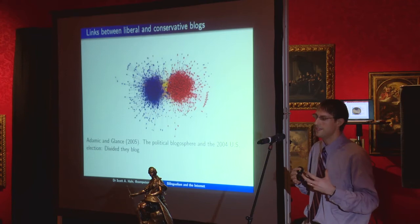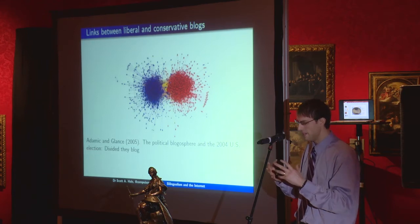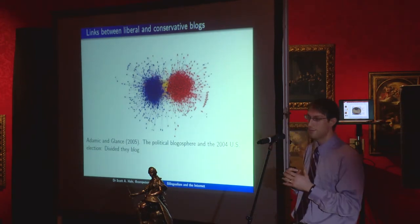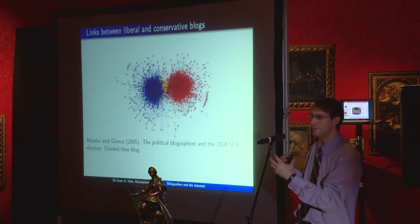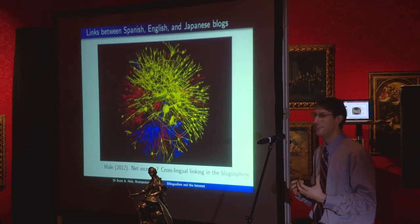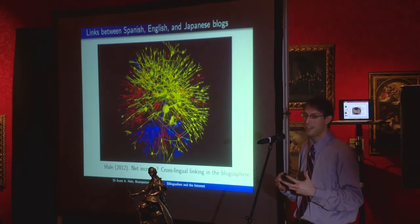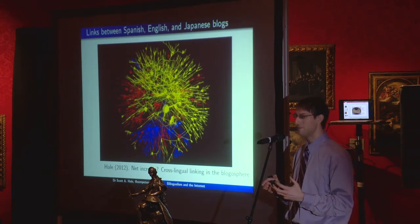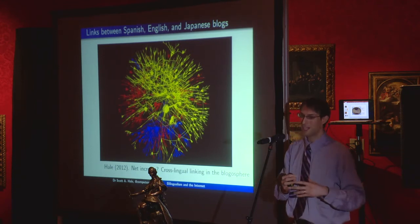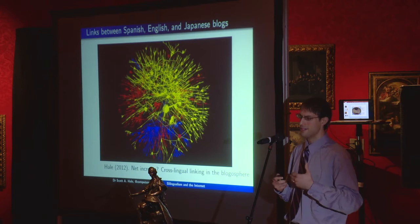I want to take a step back and ask what this means for language. Even if we look at the literature on how information differs across ideology — conservative bloggers and liberal bloggers mostly linking to each other with very few links crossing ideology — we see the same thing with language. Here are bloggers writing about the Haitian earthquake in 2011 in English, Spanish, and Japanese. There are a few connections between these different languages, but by and large most people writing in English just link to others writing in English, and most writing in Japanese link to others in Japanese.